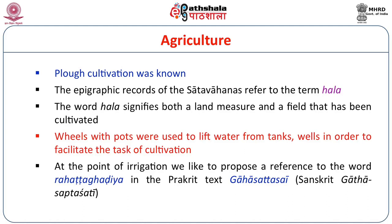Regarding irrigation, from the records of the Satavahanas we get a reference to the word 'rahatya ghariya jantra' — that is, from the Prakrit text Gaha Sattasai written by Satavahana king Halo, whose Sanskrit rendering is Gatha Saptashati. In this text we find the word 'rahatya,' meaning araghatya — wheels with pots — so that it could be used to lift water from wells and distribute it to the land to facilitate cultivation.